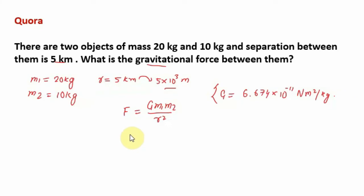Now put all the values in the given formula. Force equals, put the value of G: 6.674 × 10⁻¹¹, multiply by mass 1, which is 20 kg, and mass 2 is 10 kg. Now divide this by the separation, which is 5 × 10³, and the whole is squared.